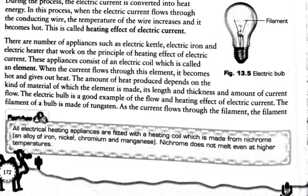The heat produced also depends on the length and thickness of the conductor, and the amount of current flowing through it. So heat production depends on four factors: nature of material, length of conductor, thickness of conductor, and the amount of current which flows through the conductor.